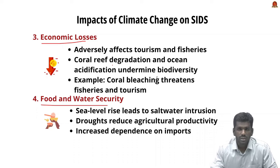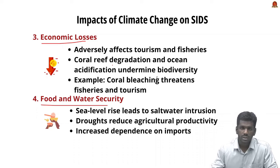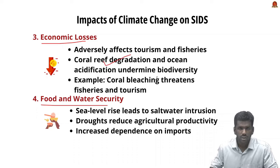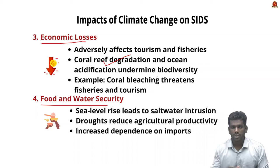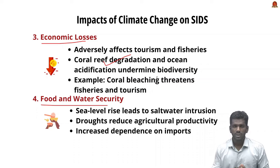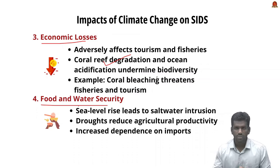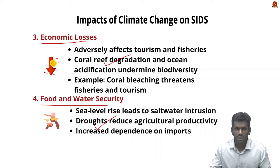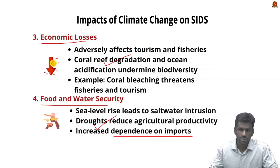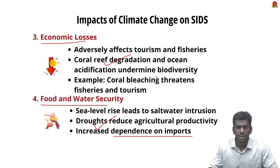Climate change adversely affects key sectors like tourism and fisheries in small island states. It leads to degradation of coral reefs and ocean acidification, undermining tourism and marine biodiversity. Coral bleaching threatens fisheries and tourism-dependent economies. Regarding food and water security: sea level rise leads to saltwater intrusion into freshwater sources, causing droughts and reduction of agricultural productivity, making these nations more dependent on imports.